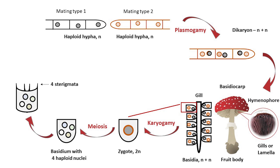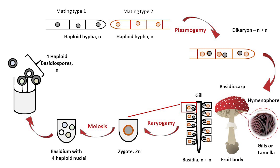Then the basidium forms four horn-like cellular extensions known as sterigmata. The nuclei gradually migrate to the tips of the basidium, and one nucleus will migrate into each spore that develops at the tip of each sterigma. At the end, four haploid basidiospores will be developed from a single basidium. After maturation, the basidiospore will germinate into a haploid hypha and the cycle may repeat.